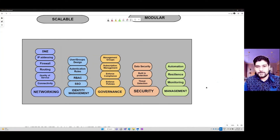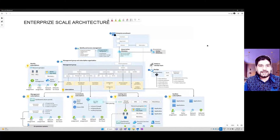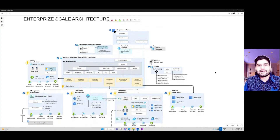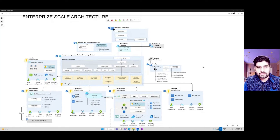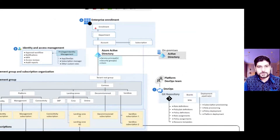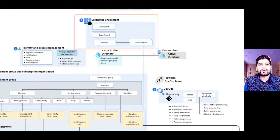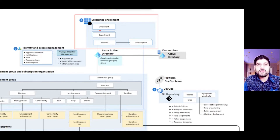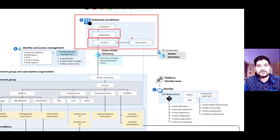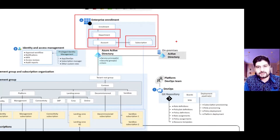Now to see this in action, you can look at enterprise scale architecture and how a solution architect designs an enterprise scale solution. The first area is enrollment of your subscription — you think about how do you want to get the subscription. If you're a large enough enterprise, you go for an enterprise agreement, which gives you a separate portal called ea.microsoft.com. Using that portal, you can create your department structure, your account structure, and all the subscriptions that are part of that department, making overall management really easy.